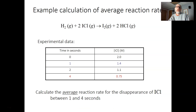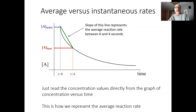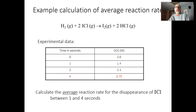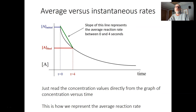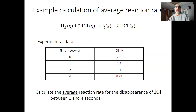The way this might look is you could have a plot to read values from, or a table of data where you want to know the average reaction rate between, say, one second and four seconds. You could calculate that. We're going to work this problem a little bit later, but this is what an average reaction rate looks like — we can calculate the average rate of reaction for a particular chemical reaction using that plot or table of data.